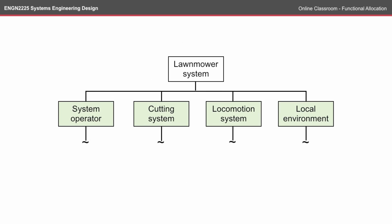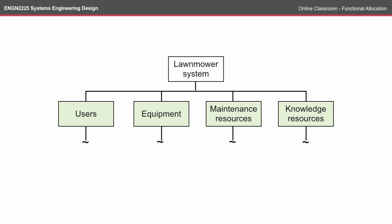The hierarchy process is not overly difficult, but different companies will use different strategies to categorize the functions, and this will result in different strategic goals and task allocations. Here's the hierarchy I use: system operator, cutting system, locomotion system, and local environment. You can quite easily see how you might have a different set of hierarchies using users, equipment, maintenance resources, and knowledge resources. The key idea is that you're able to provide a logical hierarchy.